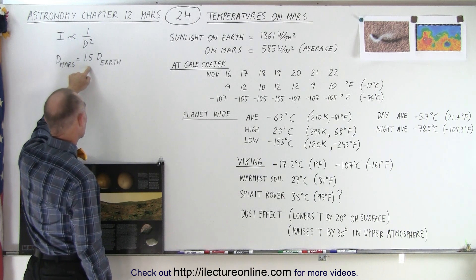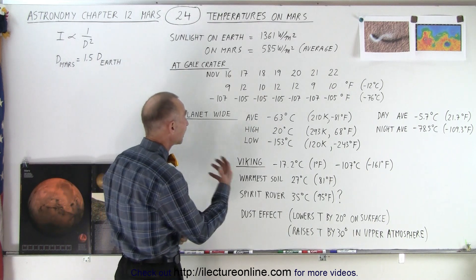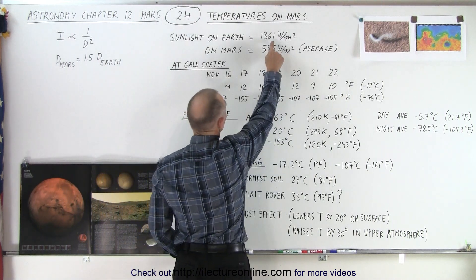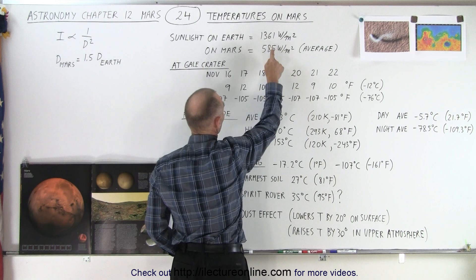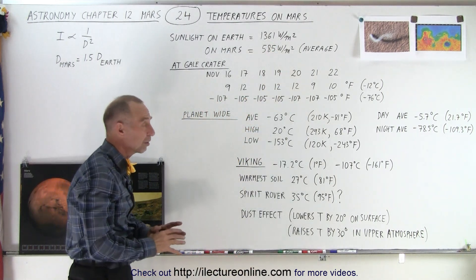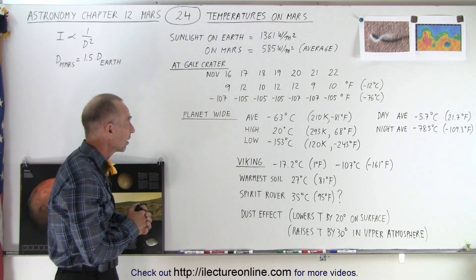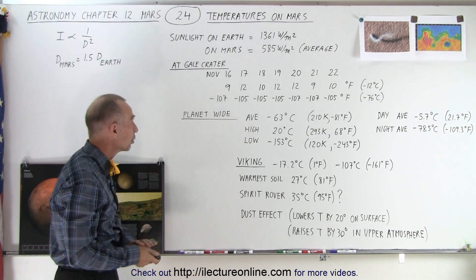Because the intensity of light we receive is proportional to one over the distance squared, and since the distance on Mars is about one and a half times the distance of Earth, we find that the intensity of sunlight on Earth is 1361 watts per square meter, where on Mars on average it's only about 585 watts per square meter. So it's less than half the warmth we get from the sun on Mars relative to Earth.